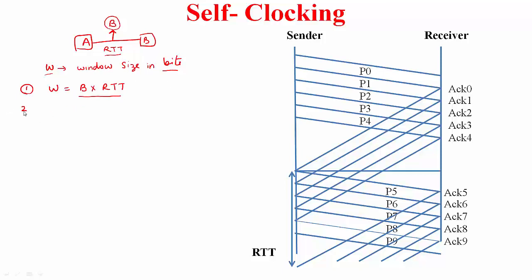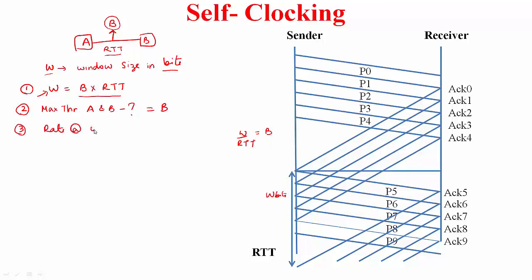If you are using this W, what is the maximum throughput that can be achieved between A and B? This will be the link capacity B, because within one round trip time you are sending W bits, and the throughput W/RTT equals the link capacity. Now, at what rate are ACKs coming?